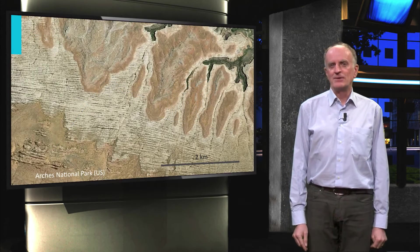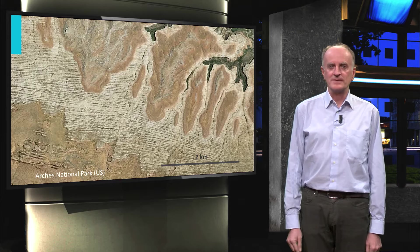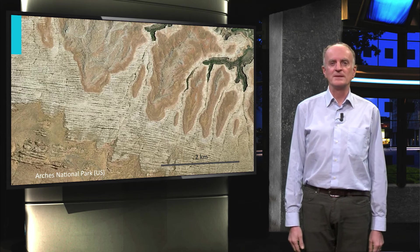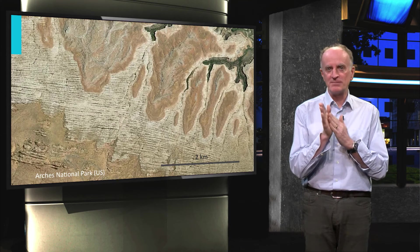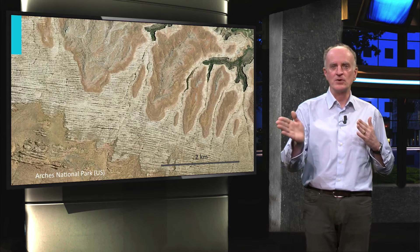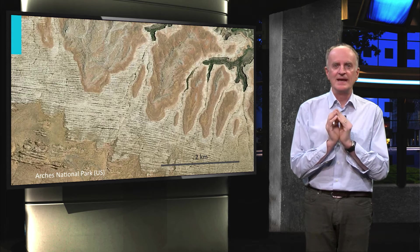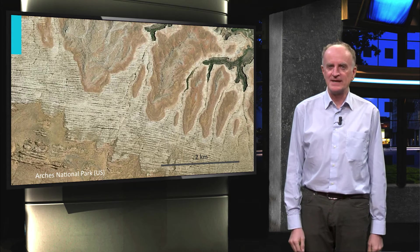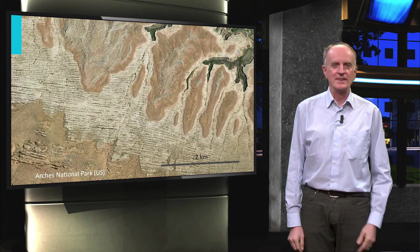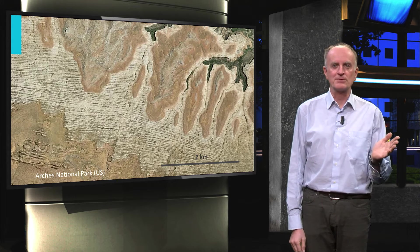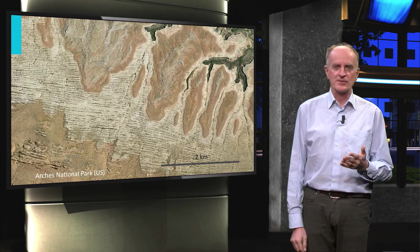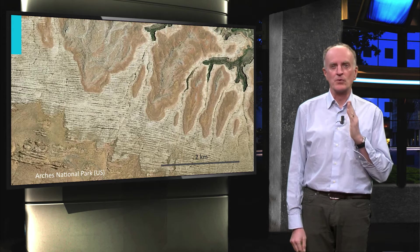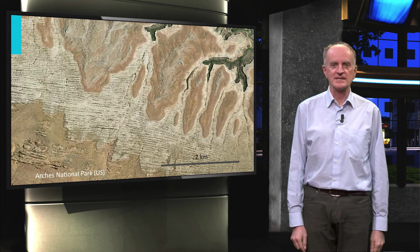Let us look now at the initial stage of deformation. The most common structures developing are joints. These are planar, very sharp features, often very long and with minimal displacement. Like in the case shown in the slide, joints never come alone. They come in thousands, generally nicely parallel to each other. Joints are often organized in one, two, or more rarely more directional sets.